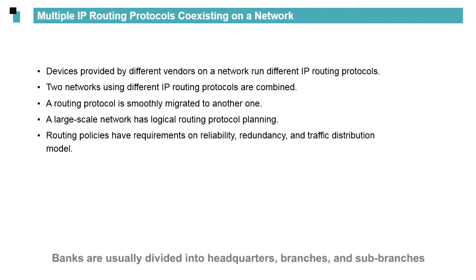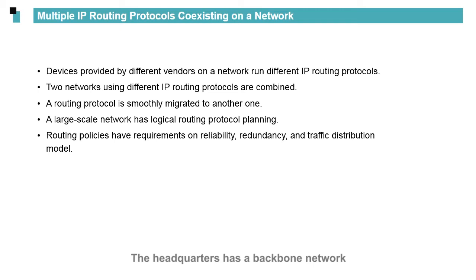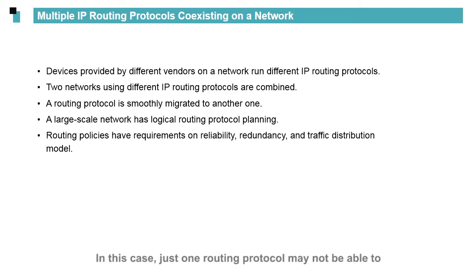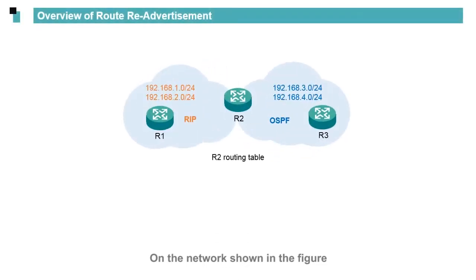Banks are usually divided into headquarters, branches, and sub-branches. The headquarters has a backbone network, branches have their own aggregation devices and LANs, and sub-branches have their own routing devices. Such a large-scale network requires redundancy. In this case, just one routing protocol may not be able to meet network reachability requirements by itself.